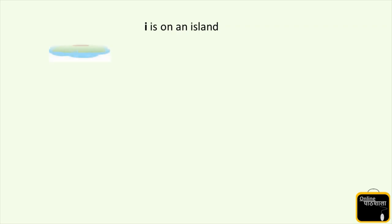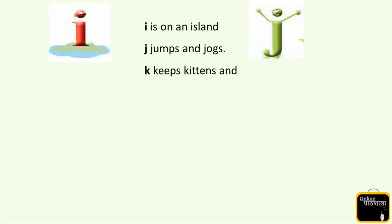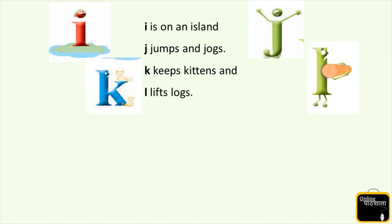I is on an island. J jumps and jogs. K keeps kittens. And L lifts a log. I is doing a party on the island. And J is jumping here and there. K has kittens - how many kittens does he have? He has two kittens. Kitten means a small cat, a baby cat. And L is holding a log - he is very tired now holding this log.